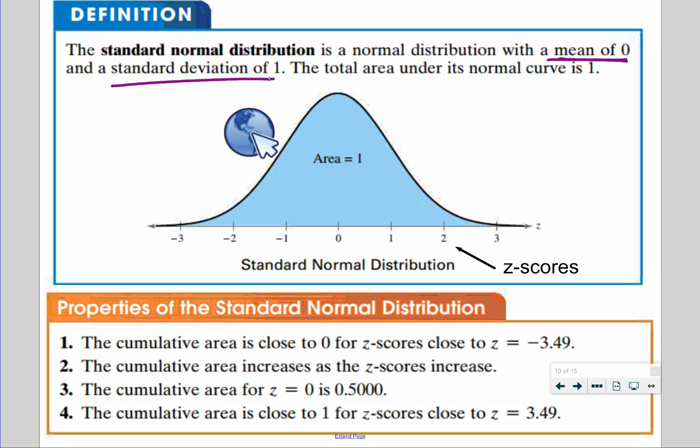By the same token, if you have a positive 3.49 z-score, we say the cumulative area to this point from left to right is one. The area under the curve is total one. The cumulative area to the mean, which is right in the middle here, is 0.5. Half of my data is to the left, half of my data is to the right. And then the cumulative area increases from left to right as z-score increases.